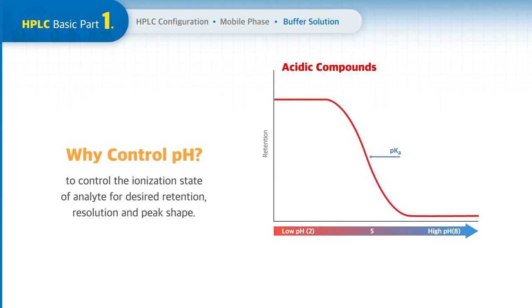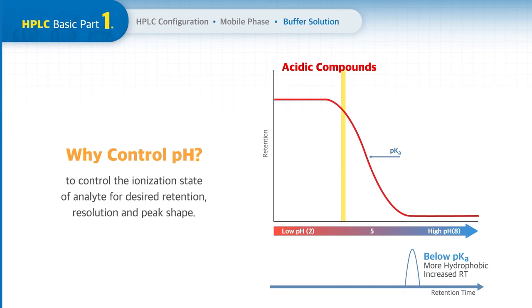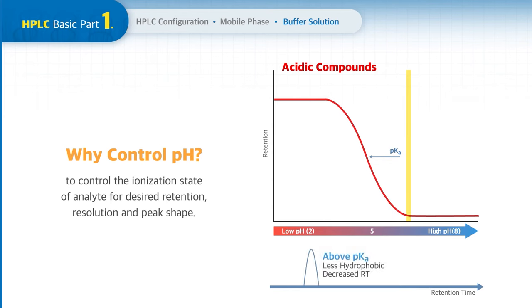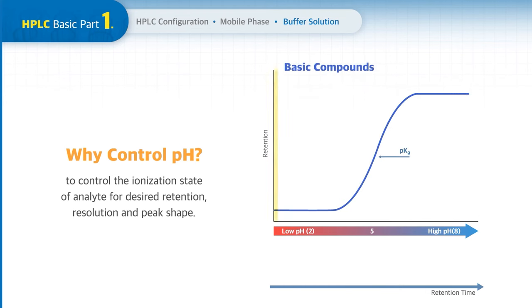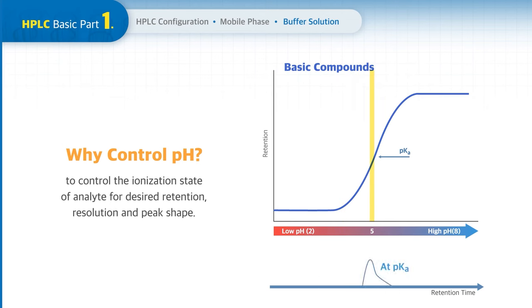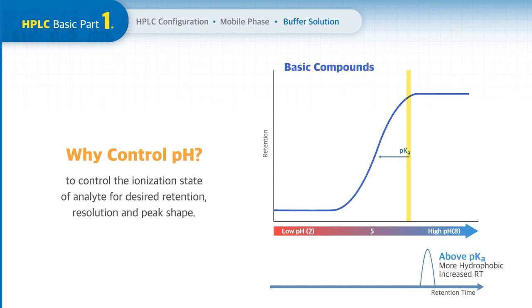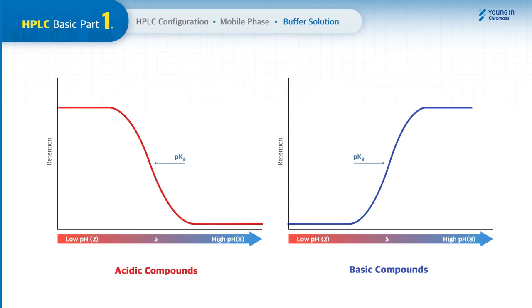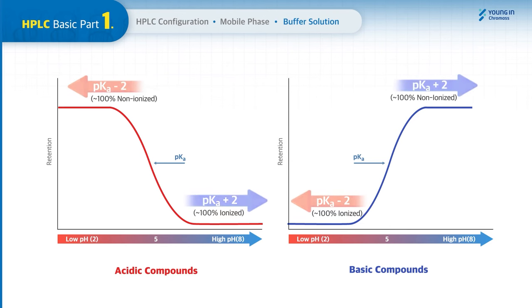For acidic compounds, if the pH is below the pKa, the analyte becomes more hydrophobic and is retained longer. At the pKa range, small changes in pH lead to large changes in retention and resolution. If pH is above the pKa, the analyte becomes less hydrophobic and elutes faster. For basic compounds, it works vice versa. The most important rule is that the pH of the mobile phase must be at least two units above or below the pKa value for maximum analyte stabilization.